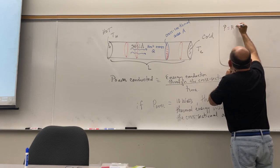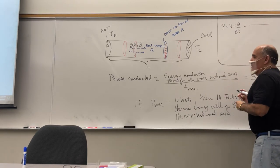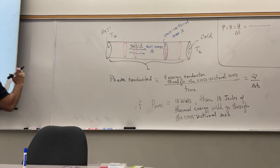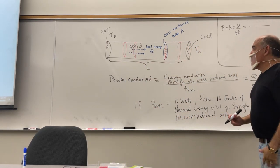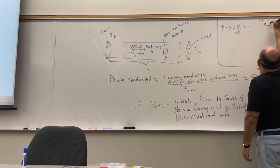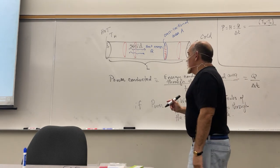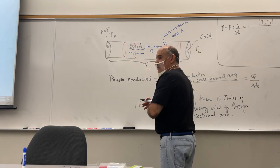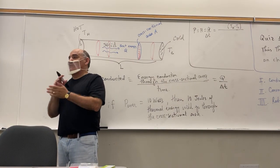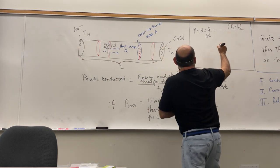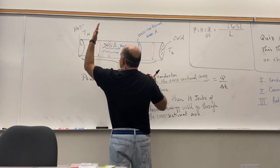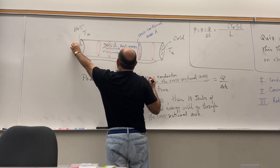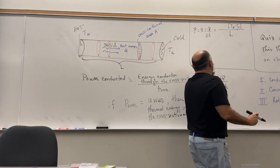The formula for conducted power P (or H) equals k·A·(T_hot − T_cold)/L. It depends on the temperature difference — the bigger the difference, the more energy per second. The length L goes in the denominator: the closer the two ends, the more energy through per second. Note: this L is the separation distance, not the latent heat L.